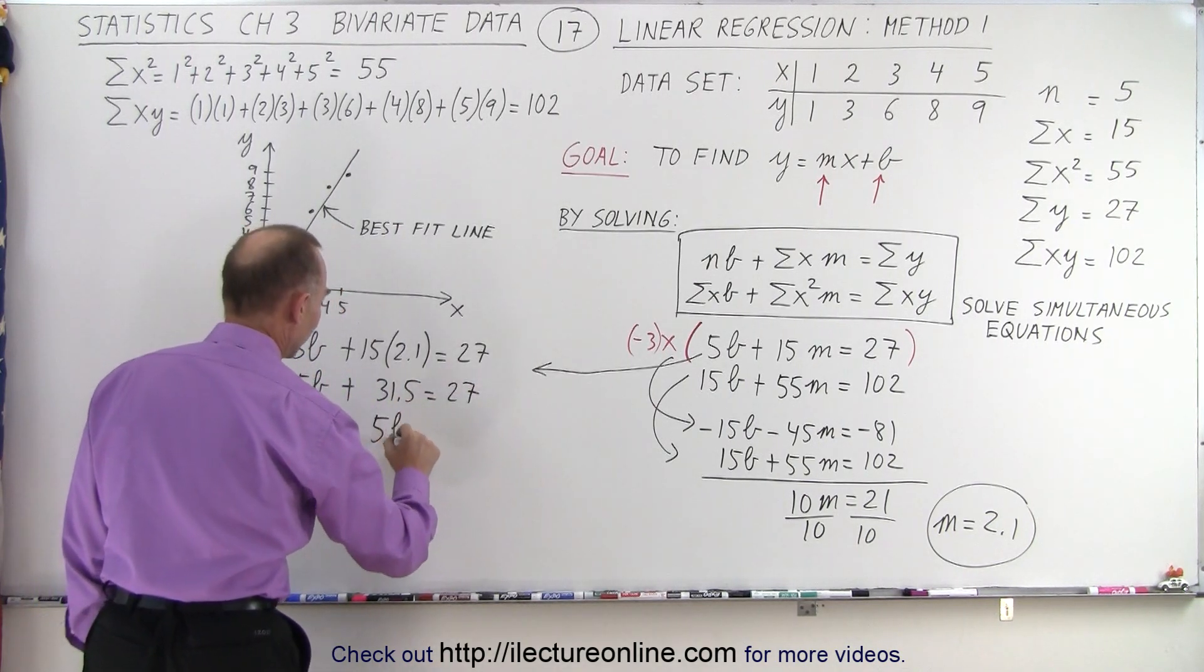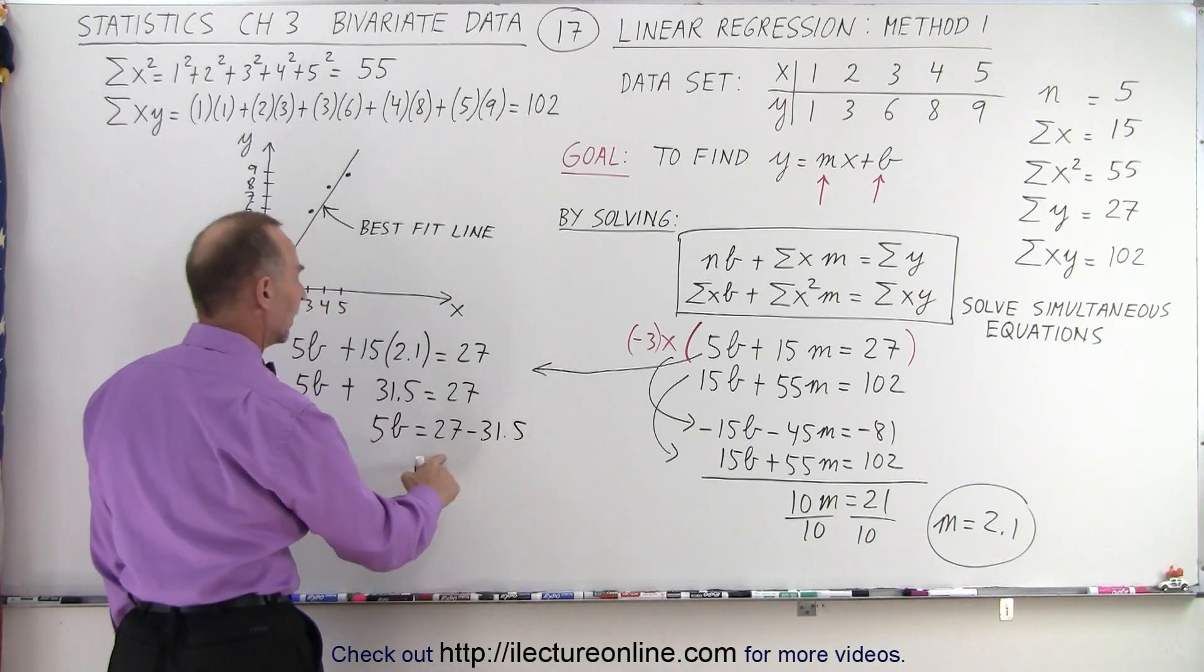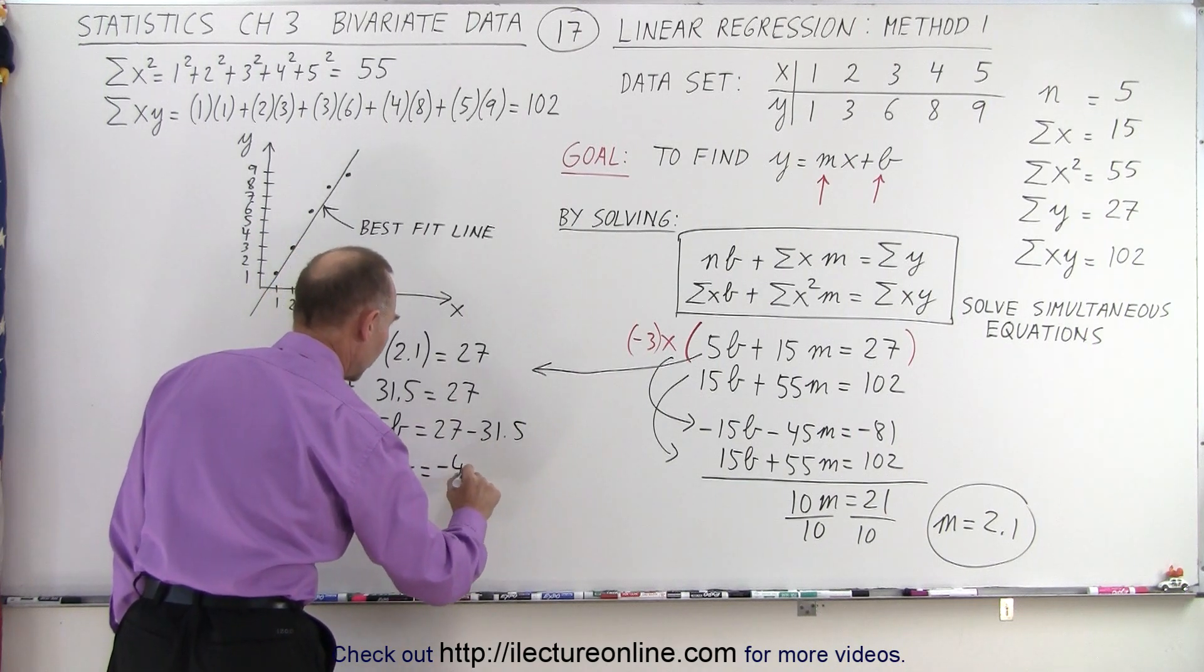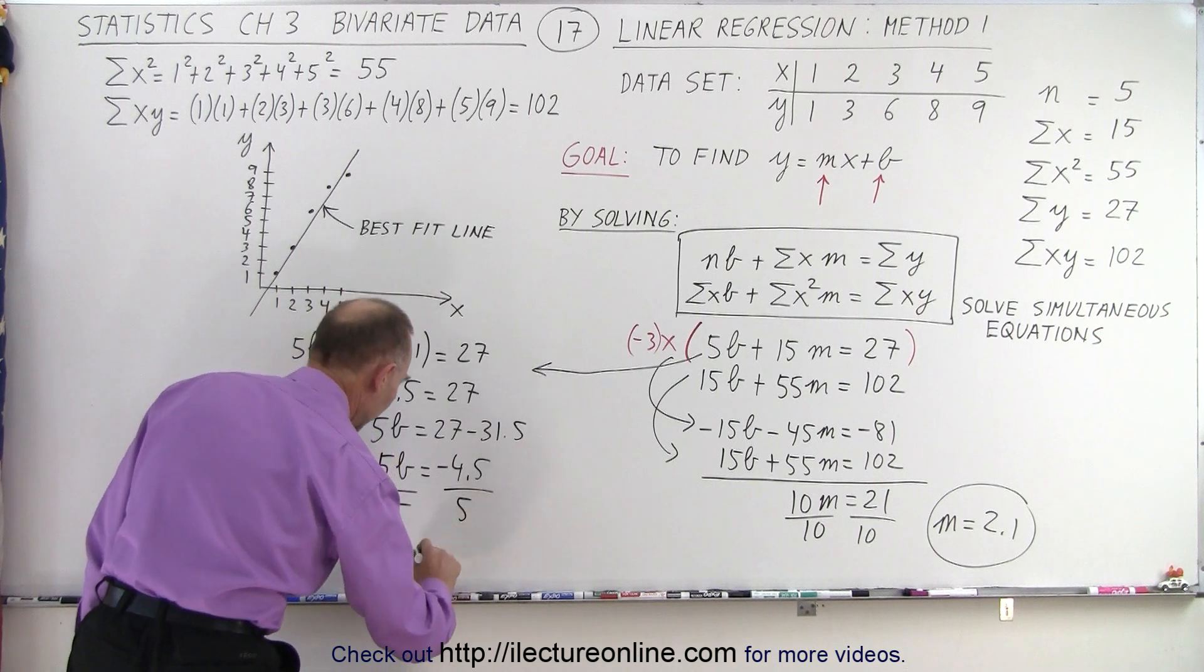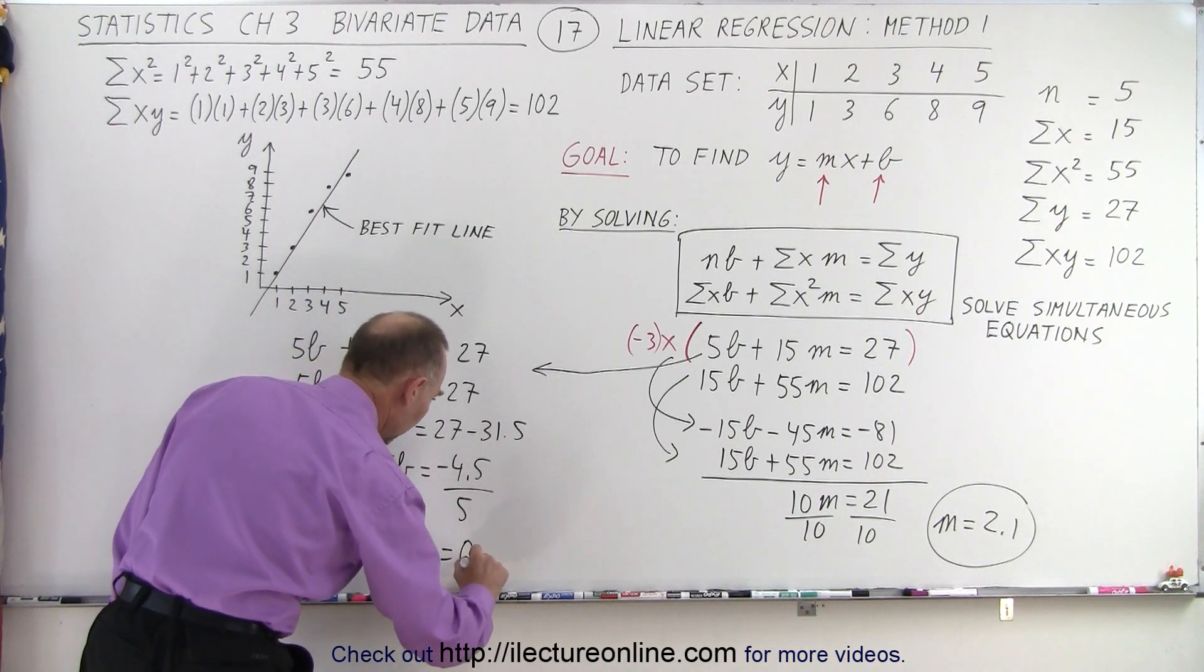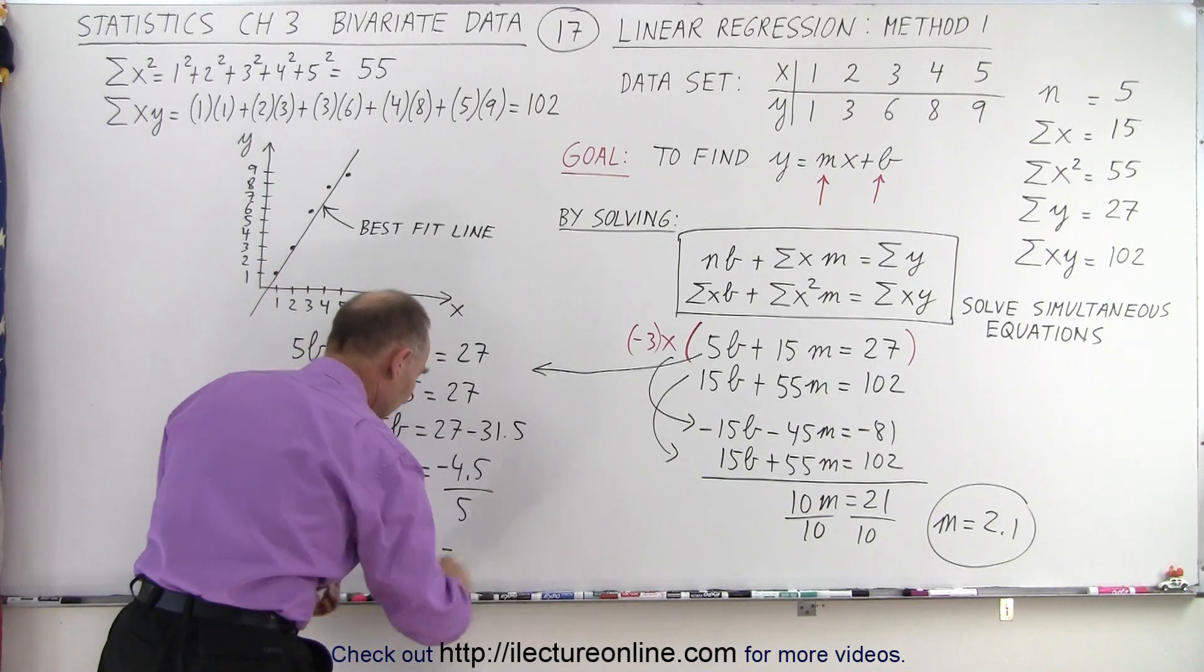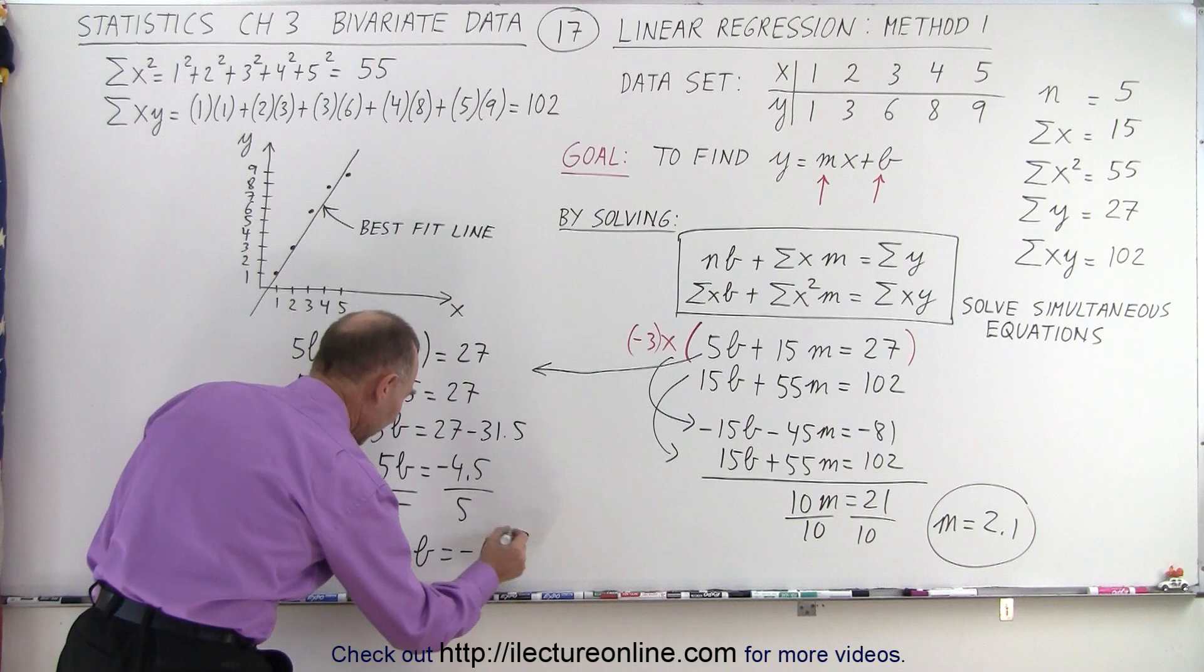Or 5b is equal to 27 minus 31.5. That would be minus 4.5. So 5b equals minus 4.5. Divide both sides by the numerical coefficient, and we get b is equal to, oh, not 0, negative 0.9. Negative 0.9 because it's minus 4.5 here. All right.